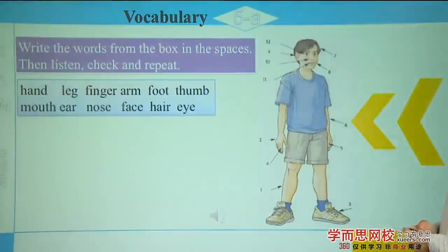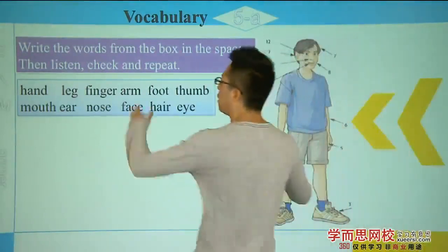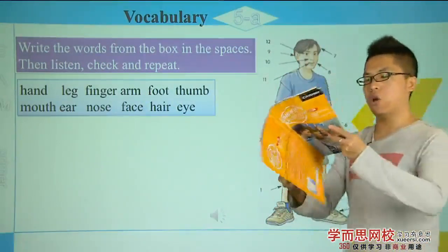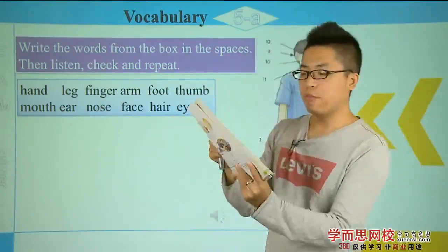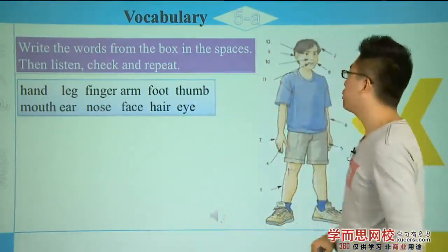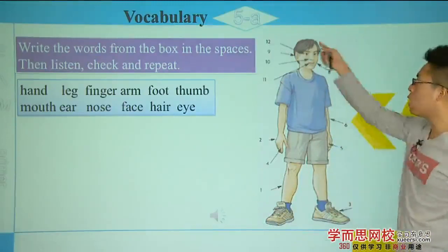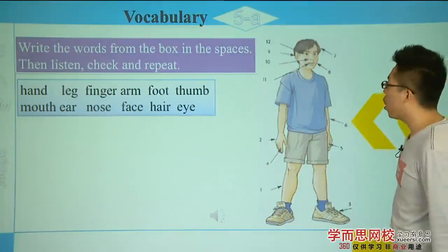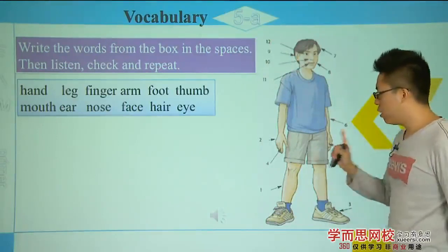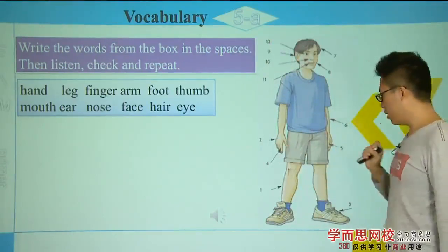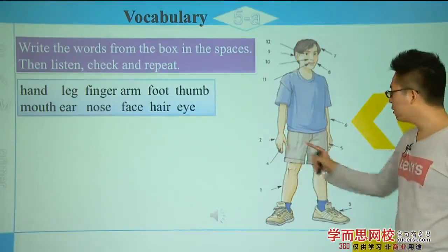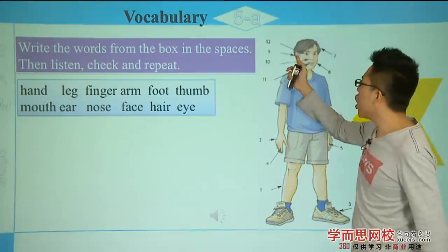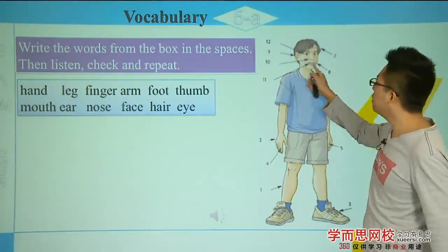Now let's move to the next part: write words from the box in the spaces, then listen, check, and repeat. On page 44 you can see a body diagram — the parts of the body. This is a boy, and we'll learn 12 different parts. Let's count: 1, 2, 3, 4, 5, 6, 7, 8, 9, 10, 11, and 12.